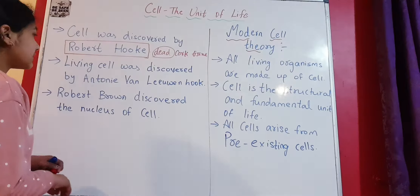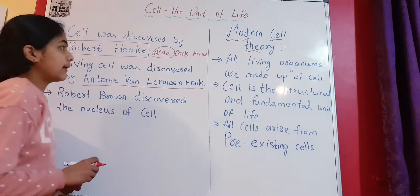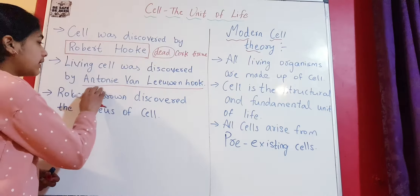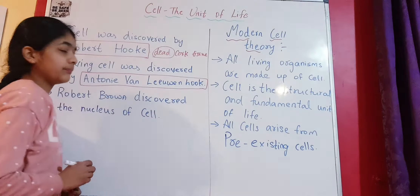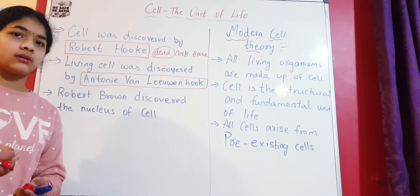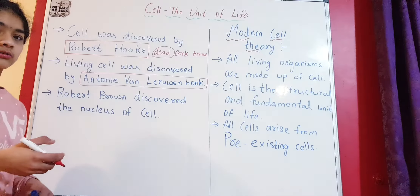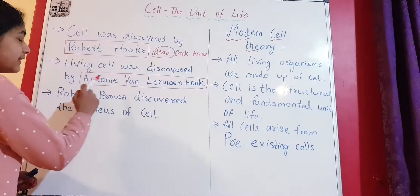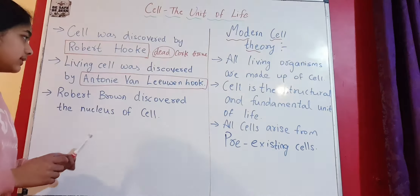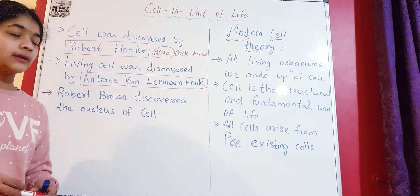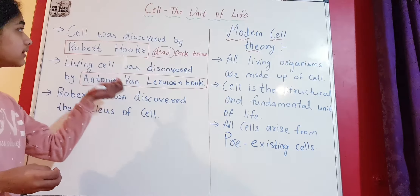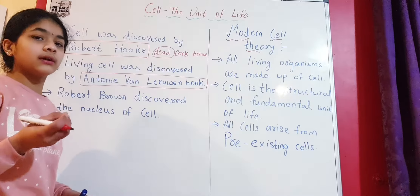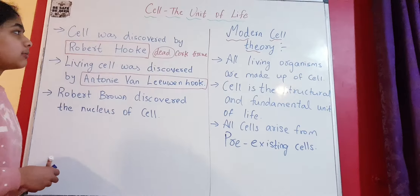The living cell was supposedly discovered by Antony van Leeuwenhoek. If a question comes asking who discovered the cell, the first answer is Robert Hooke — but he discovered it in a dead tissue. Antony van Leeuwenhoek discovered the cell in a living sample. He collected some little leaves and water from a pond and observed them under a microscope. The cells looked like little animals, so Antony van Leeuwenhoek discovered the living cell.